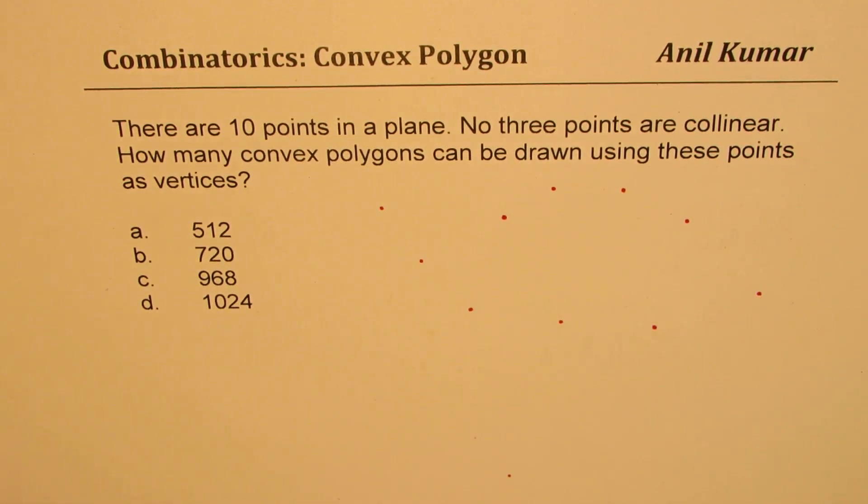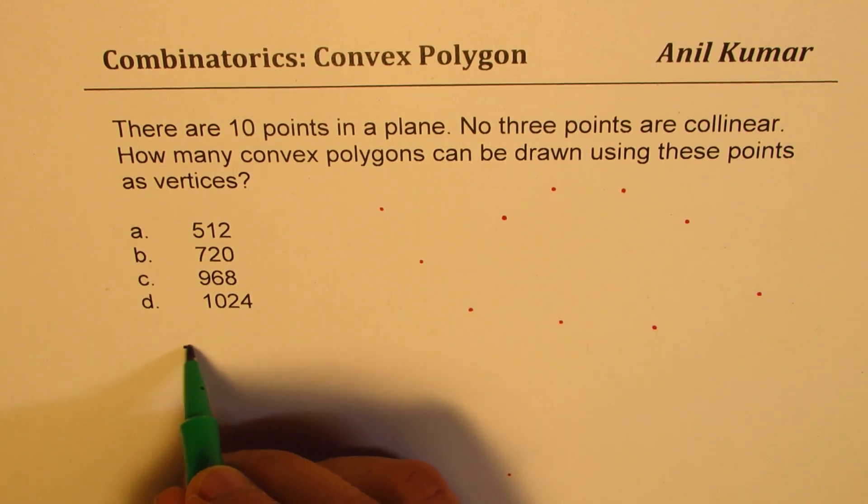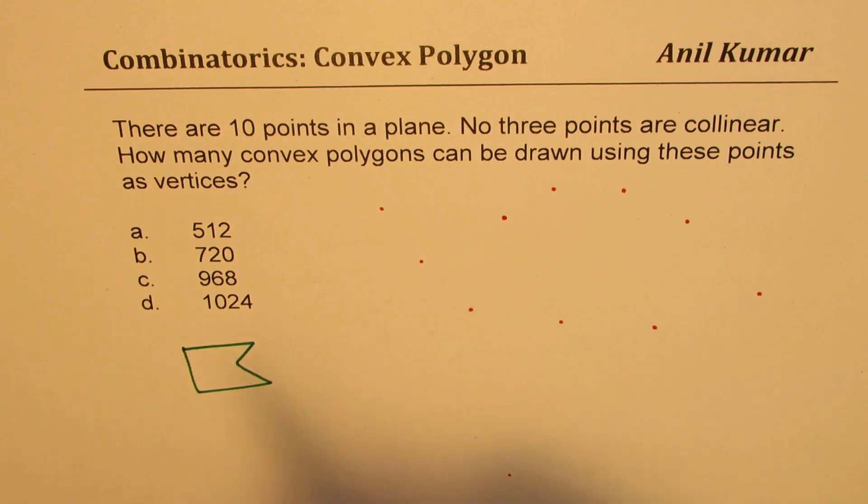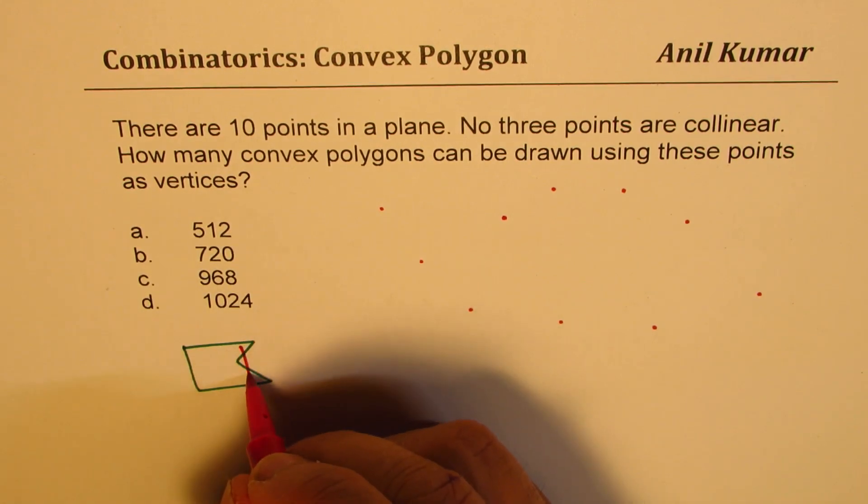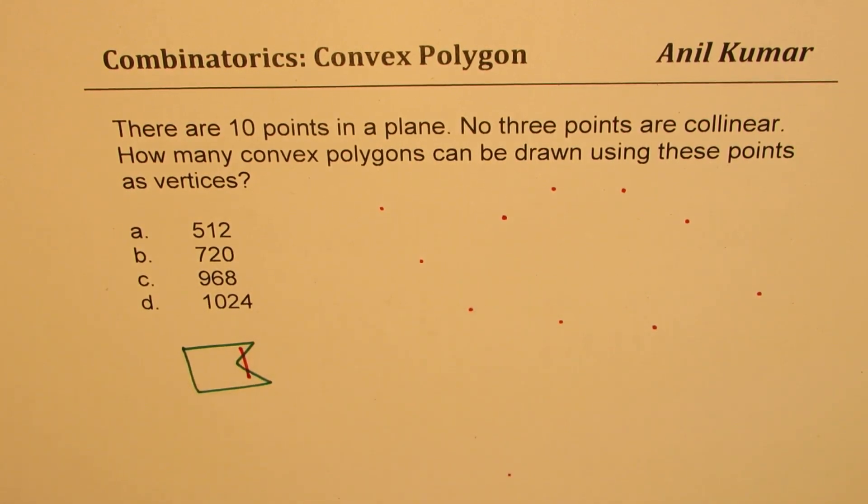How many convex polygons can you draw? Now, convex polygons are the polygons which are closed. For example, I cannot have a polygon like this, right? This is, if I take two points here, the line goes outside.